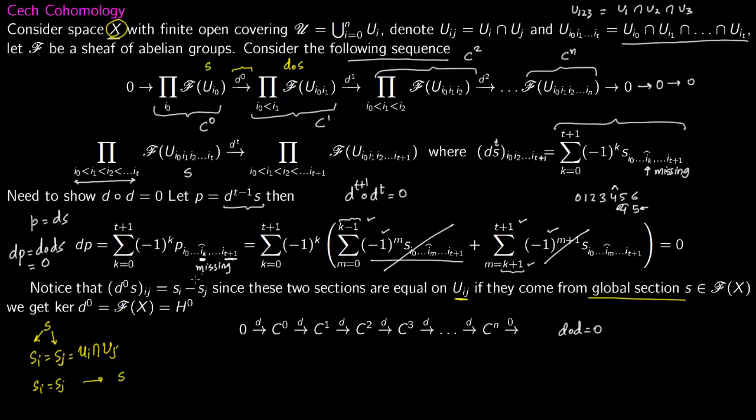So you can see this is even a gluing condition. You can glue them together and get a global section. So the kernel of this map is the global sections. But the kernel of this is also H^0. Notice that H^0 is nothing but kernel of d^0 divided by image of something, but here the image is just zero, so this is just kernel of d^0.